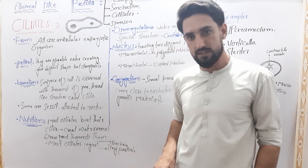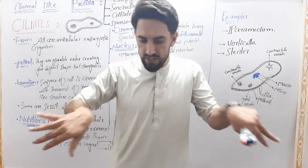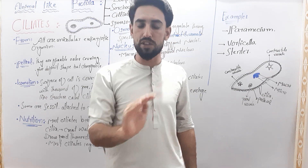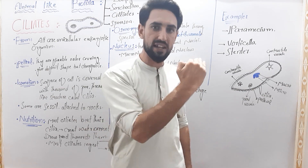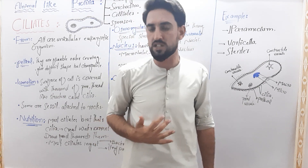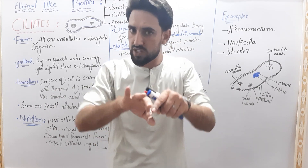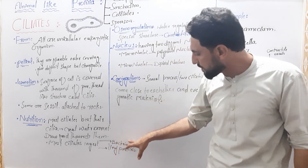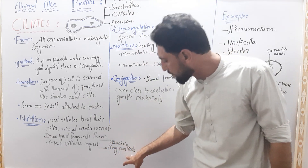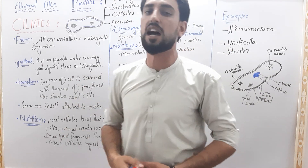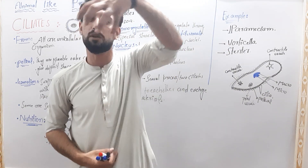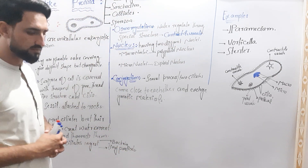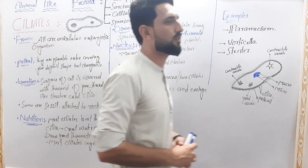The cilia create water currents. The water currents bring food toward the organism. The ciliates feed by ingestion of tiny bacteria and small particles — ingestion of tiny bacteria and small particles.